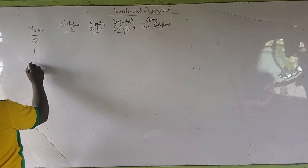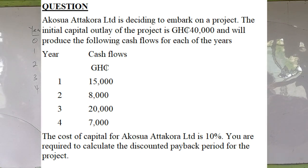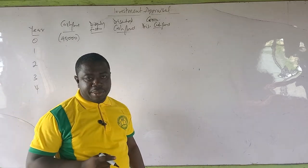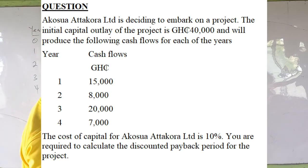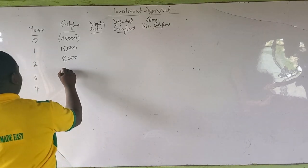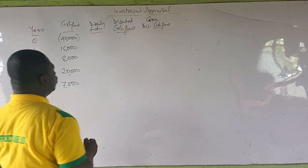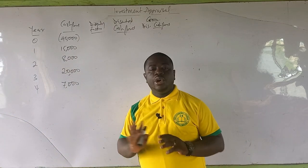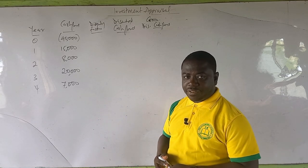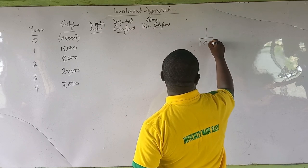We have year 0, year 1, year 2, year 3, and year 4. Year 0 is the initial capital outlay of 40,000 Ghana cedis — shown in brackets. The cash flows are: year 1 is 15,000; year 2 is 8,000; year 3 is 20,000; and year 4 is 7,000. These are the cash flows from the question. Now we are going to discount these cash flows using the formula 1 over (1 plus R) raised to the power N.